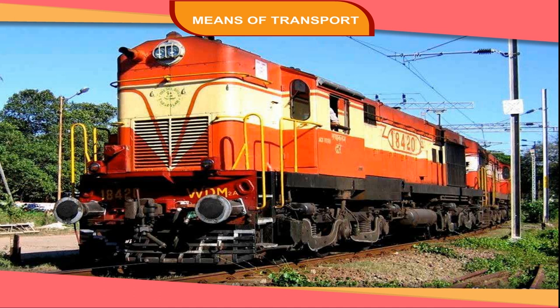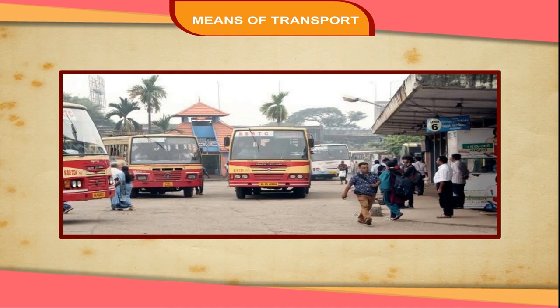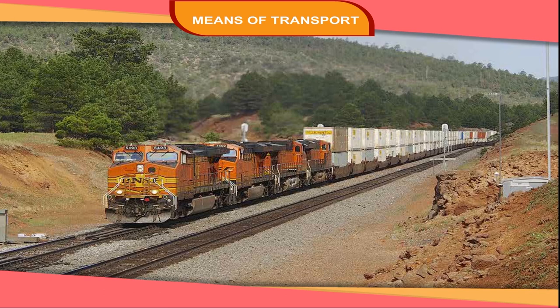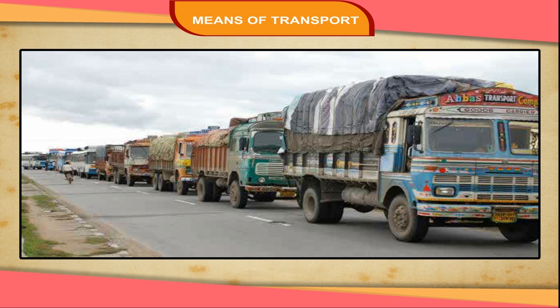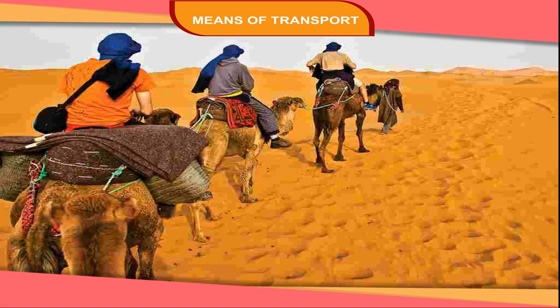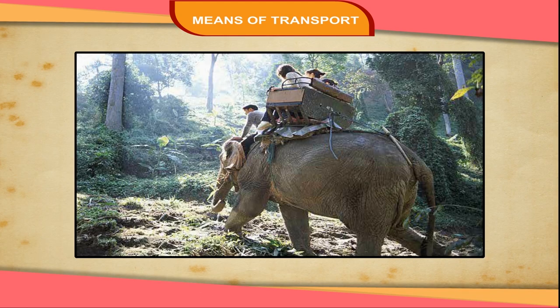People use trains and buses to go to far off places. Goods trains and trucks are used for carrying different types of goods. In the desert, people use camels for travelling and carrying goods. In thick forests, elephants are used as the means of transport.